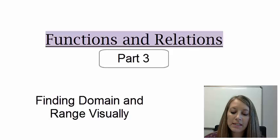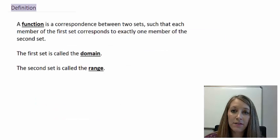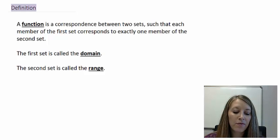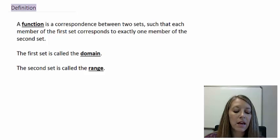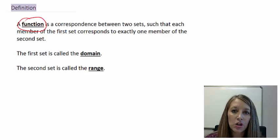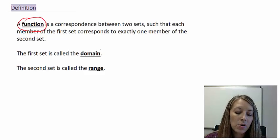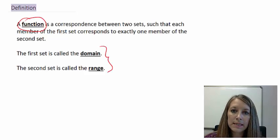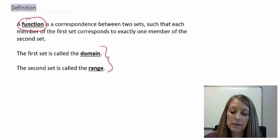The very first thing I did in functions and relations is I defined what a function was — a set off of the first set called the domain, and the second set called the range. We've clarified how to figure out whether something was a function or not, and now we want to go into more detail about what the domain and range are.